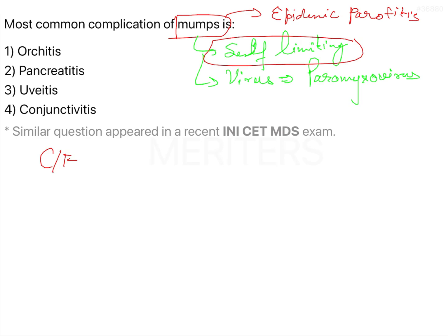The more common symptoms of mumps: first is parotid inflammation, which occurs in almost 75 percent of cases. It involves the parotid gland, but it can also involve the submandibular as well as the sublingual gland in less than 25 percent of cases. Parotitis causes swelling and local pain.